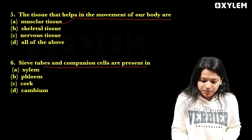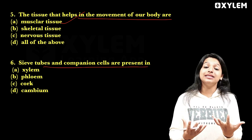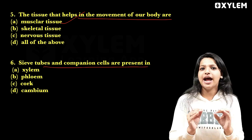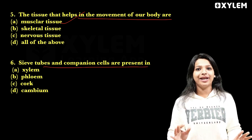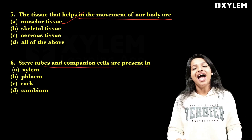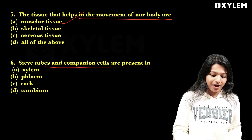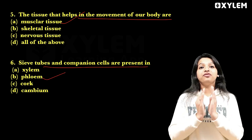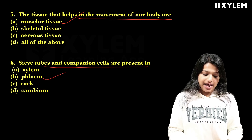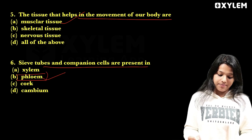Sieve tubes and companion cells are present in that tissue. That is our complex vascular tissue. The answer is phloem.